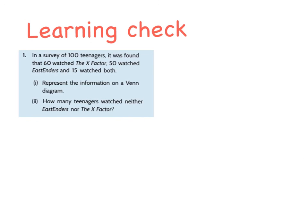Tonight's learning check is this question: in a survey of 100 teenagers, it was found that 60 watched the X Factor, 50 watched EastEnders, and 14 watched both. Represent this information on a Venn diagram, and then find how many teenagers watched neither X Factor nor EastEnders — you're looking for how many teenagers are outside the circles. Write it neatly into your copy, give it your best shot, and we'll correct it on Monday.